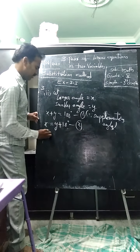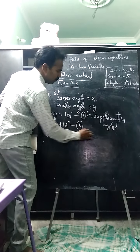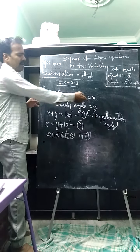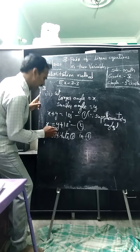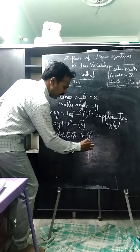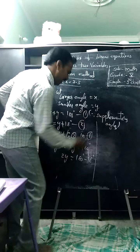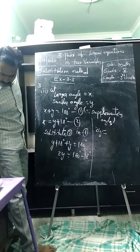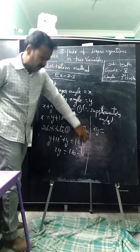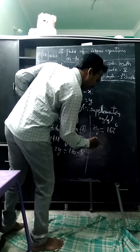Substituting x equals y plus 18 into x plus y equals 180: we get y plus 18 plus y equals 180, so 2y equals 180 minus 18, which is 162. Dividing by 2, y equals 81 degrees. So the smaller angle is 81 degrees. Then x equals y plus 18, which is 81 plus 18, so x equals 99 degrees.